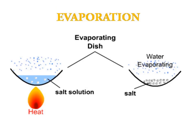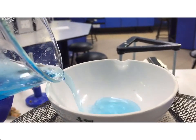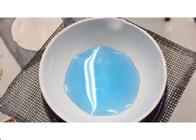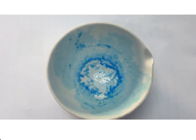Evaporation can be used to extract solid from liquid — it can extract undissolved or dissolved solid from a solution by applying heat. As a result of the heat, all the liquid evaporates and the solid is left behind. We use an evaporating dish to hold the substance and apply heat. The evaporating dish is good because it has a large surface area.